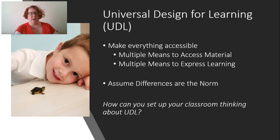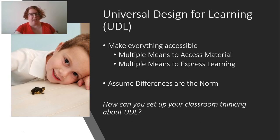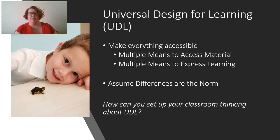Some UDL strategies you could use include making PDFs accessible, using closed captioning, thinking about classroom layout for wheelchair access, offering multiple ways to sit, and taking breaks for students with ADHD. Many accommodations made for students with disabilities benefit lots of students. For example, giving an open-ended project allows a range of answers — students respond at their level, whether very basic or very deep. That allows everyone to participate in the learning, even at different levels.